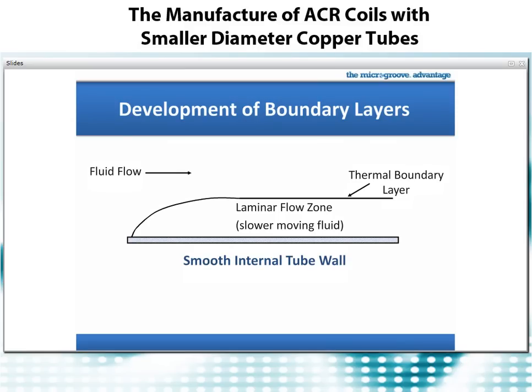Whenever fluid moves through a tube, the fluid closest to the tube wall behaves differently than the fluid in the center. The fluid next to the tube wall sets up a boundary layer, in which heat transfer becomes more difficult. This applies to the hydraulic motion of fluid as well as the way heat moves from the center of the tube to the tube wall. Fluid closest to the tube wall tends to move slower, and even in turbulent flow, a laminar sub-layer forms. Heat moves slower through these boundary layers, which act as an insulator interfering with the heat transfer we want. In a smooth tube, the boundary layer develops and does not dissipate or go away.